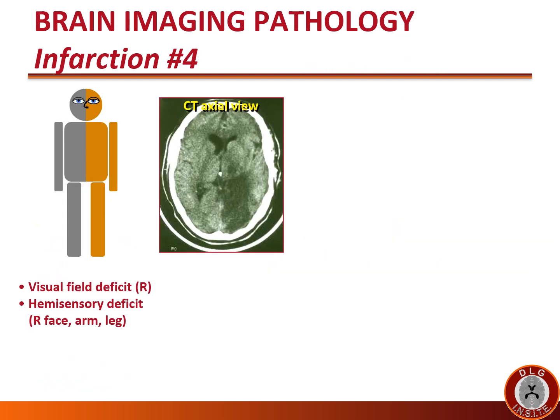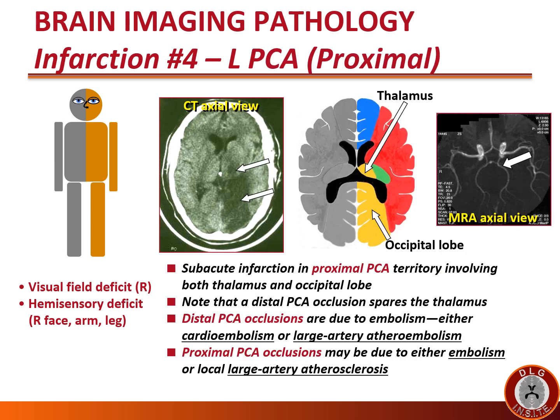This patient presented with a right visual field deficit and right hemisensory deficit involving the face, arm, and leg. The CT shows a subacute infarction — dark with mass effect and compression of the atrium of the lateral ventricle — in the proximal PCA territory, proximal because it involves both thalamus and occipital lobe. A distal PCA occlusion would spare the thalamus. Distal PCA occlusions are usually due to embolism — cardioembolism or large artery atheroembolism — while proximal PCA occlusions may be due to either embolism or local large artery atherosclerosis in the posterior cerebral artery itself.